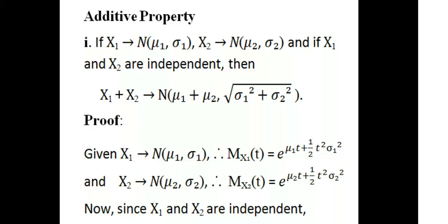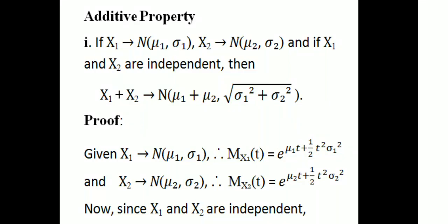Next, we have the additive property of normal distribution. What we have done is the moment generating function of normal distribution: Mx(t) = e raised to μt plus half t squared σ squared. Now we have the additive property of normal distribution.